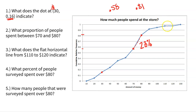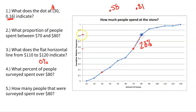We already talked about what the flat line means — a flat line indicates that 0% of people spent in that range of money. What percent of people surveyed spent over $80? We already said $80 was roughly at the 81st percentile, meaning 81% of people spent $80 or less. So 19% spent more. That's easy to find — just a little bit of math.